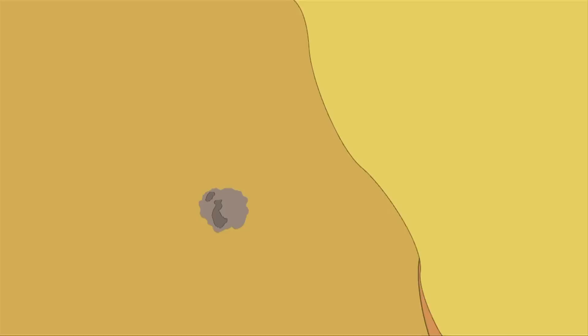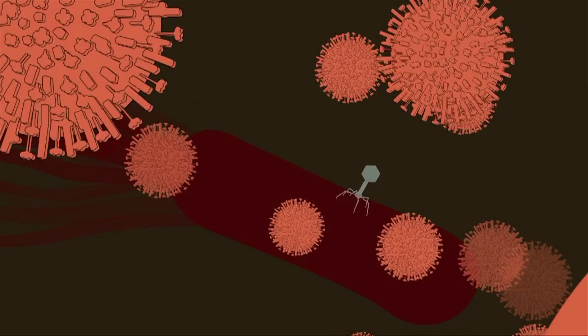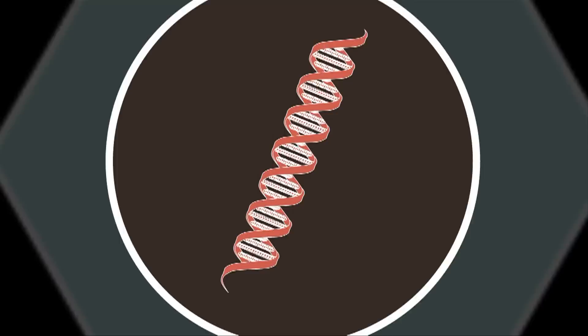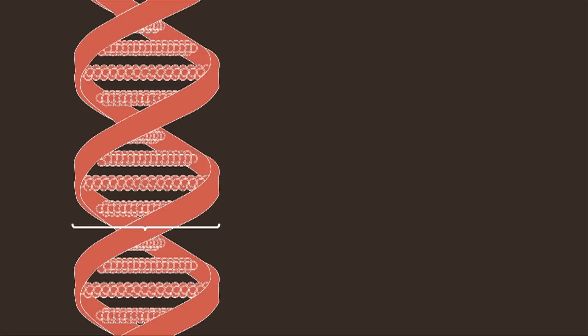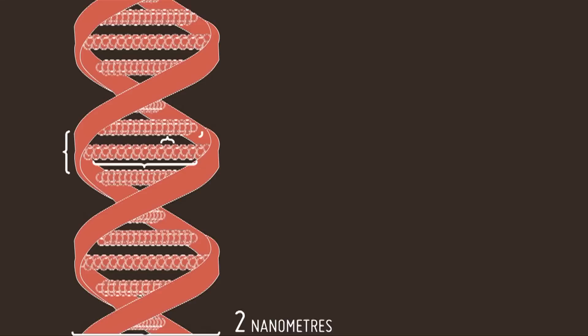We can't see things this small. A bacterium is about 2 micrometres. Smaller still are viruses and phages. And so we go down to DNA, our molecular blueprints. DNA is 2 billionths of a metre in diameter, or more conveniently, 2 nanometres — the units that we use to measure the building blocks of everything. Welcome to the nanoscale.